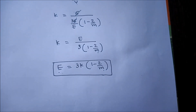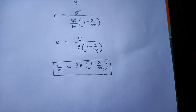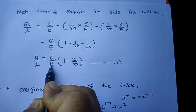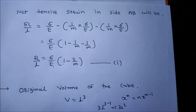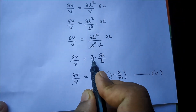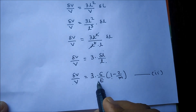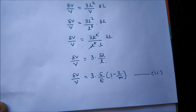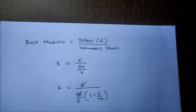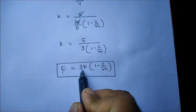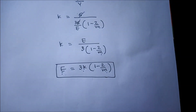So we derive this relation in three steps. Step 1: find net tensile strain in edge AB — delta L by L equals (sigma/E)(1 minus 2/m). Step 2: find volumetric strain — delta V by V equals 3 times delta L by L, giving delta V by V equals 3 sigma by E times (1 minus 2/m). Step 3: use the definition of Bulk Modulus — K equals stress by volumetric strain — and substitute delta V by V to get E equals 3K(1 minus 2/m). Thank you.